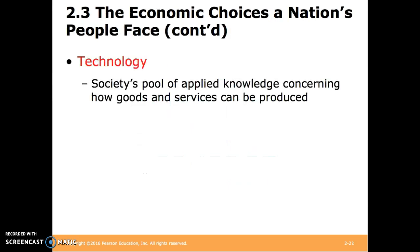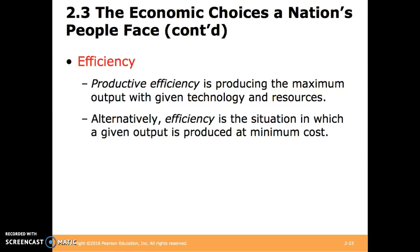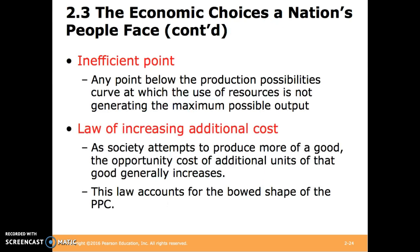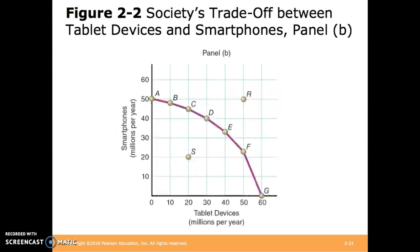When discussing technology in economics, we're talking about society's pool of applied knowledge concerning how goods and services can be produced. Productive efficiency is producing the maximum output with given technology and resources. Alternatively, efficiency is the situation in which a given output is produced at minimum cost. With the PPC, we're graphing the line where productive efficiency is reached — all productively efficient points are along the line. Any points beyond the line, such as R, are more productive but impossible to reach given the state of technology. An inefficient point is any point below the production possibilities curve at which the use of resources is not generating the maximum possible output — for example, point S.